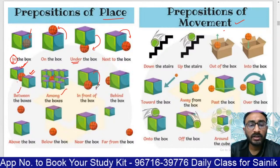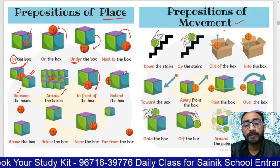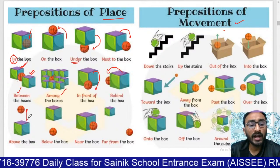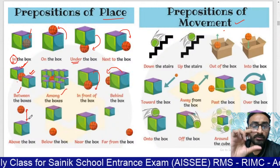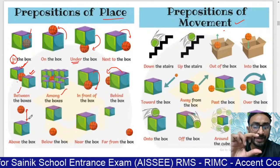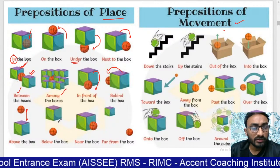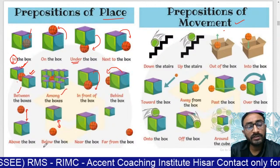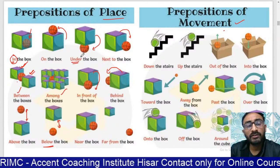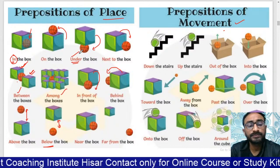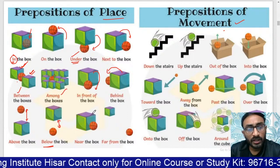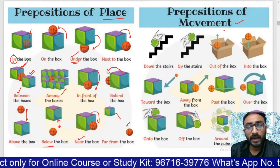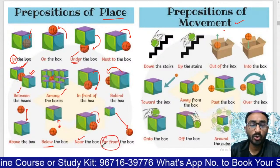If something is in front of it, it means 'saamne' (in front), and 'behind' means 'peechhe' (behind). 'Above' means there is a height and a gap between the box and the object. If something is under it but with some gap, we say 'below.' If it is somewhat touching, then it is 'under.' 'Near' means 'paas mein' (nearby), and 'away from the box' means far — 'dur hona.'